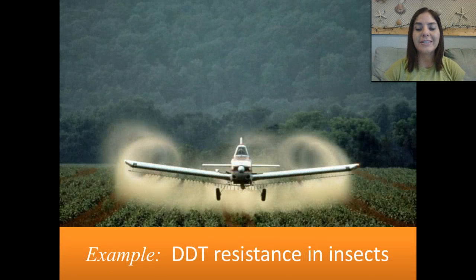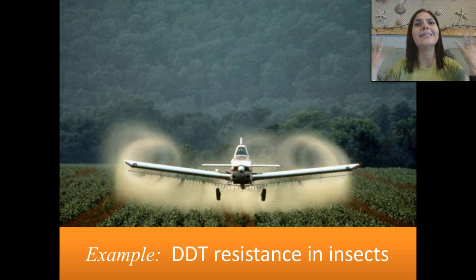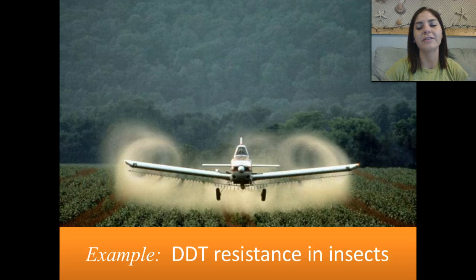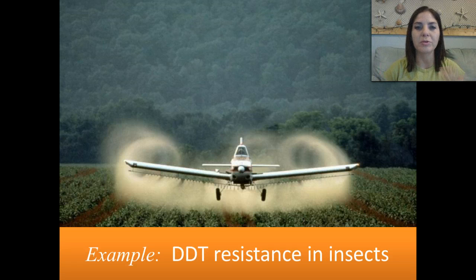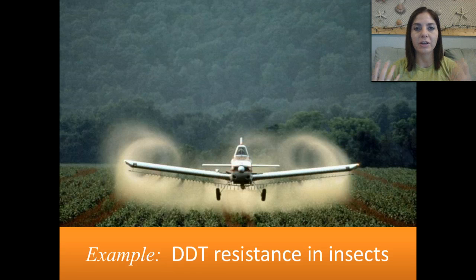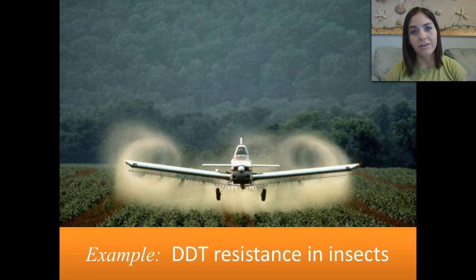Another example is DDT resistance in insects. Our crops were getting eaten by insects, so we came up with DDT, sprayed it everywhere, and then realized it had all kinds of negative effects that worked their way up the food chain. Probably the most common example of how it affected other organisms very negatively would be different bird species. DDT would get into their bodies and cause them to lay very brittle eggs. When the mother birds sat on their eggs, they would actually crush them. We saw a huge decrease in different bird species — one of the most well-known being the California condor.